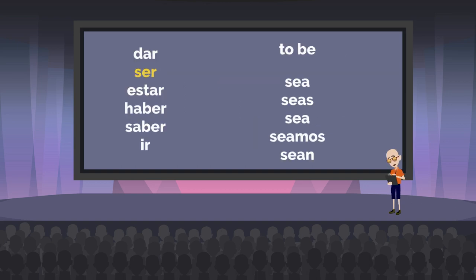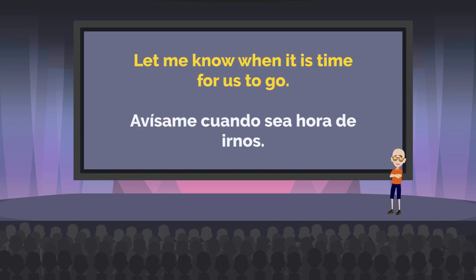Our next word is ser, which means to be. There are two verbs for 'to be' in Spanish — the other one is estar, which is right after this. Ser is for occupation, permanent states and conditions, and origin. Our conjugations are sea, seas, sea, seamos, and sean. Here it is used in a sentence: 'Let me know when it is time for us to go.'